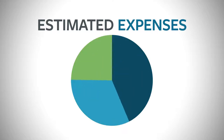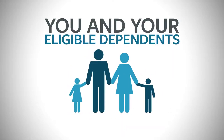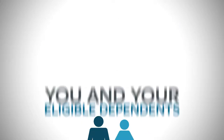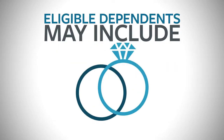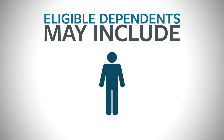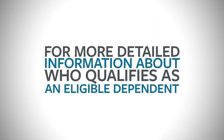And that brings us to the who of FSAs. When you make your annual election, you want to estimate the expenses that you and your eligible dependents will incur over the course of your upcoming plan year. Eligible dependents may include your spouse, children, domestic partner, or your parents. For more detailed information about who qualifies as an eligible dependent, click here on the page.